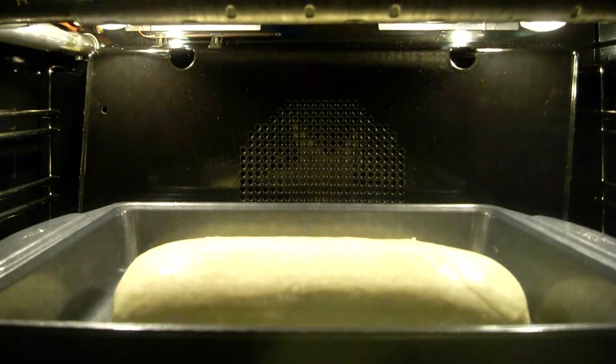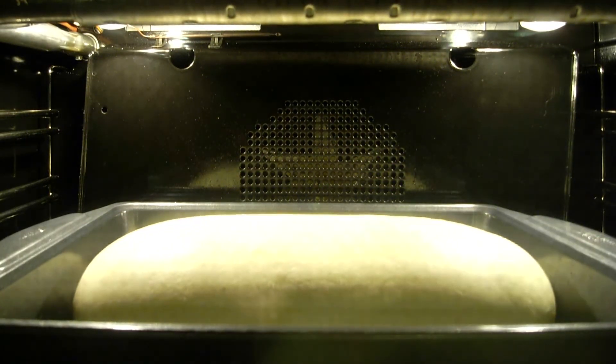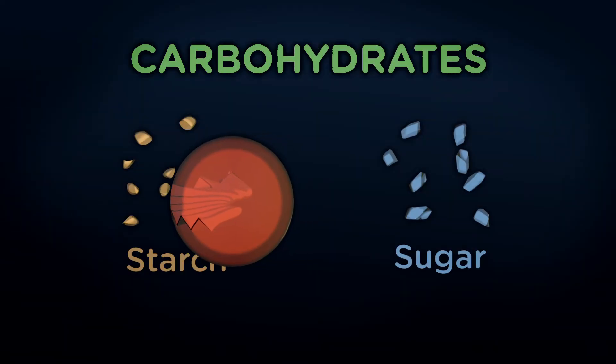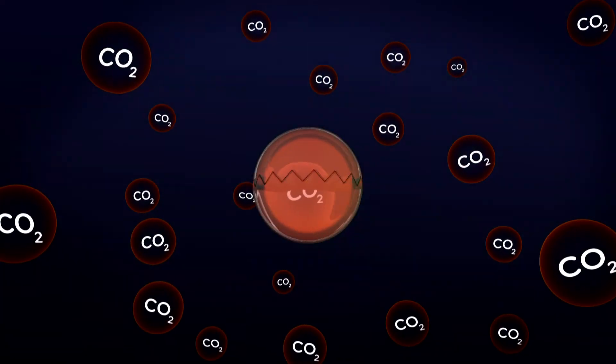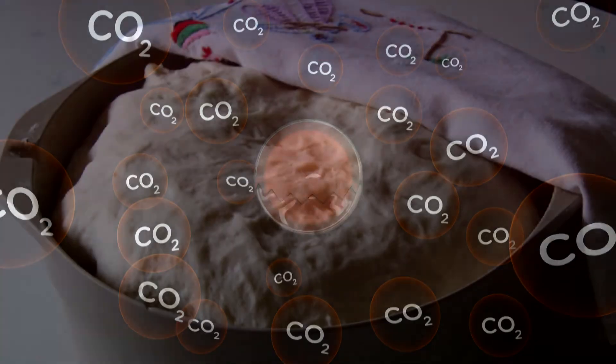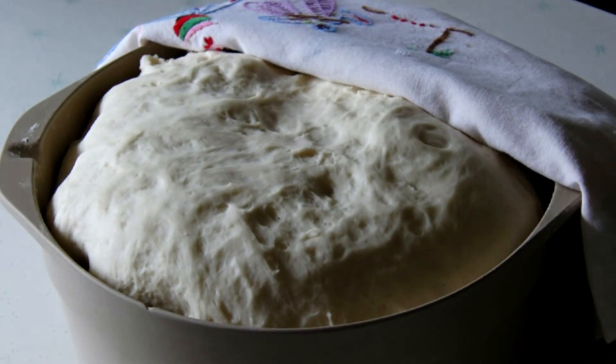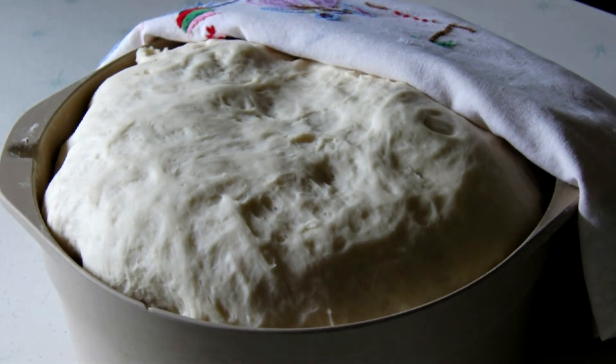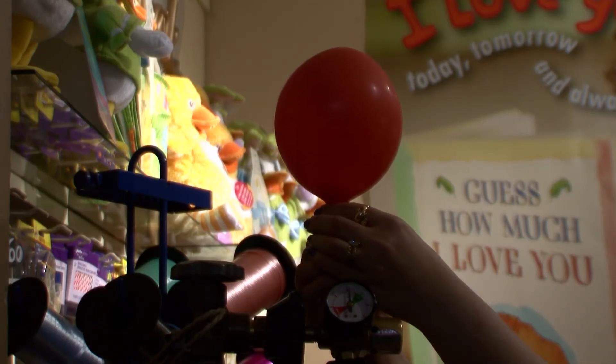You can also see CO2, or at least its effects, when you make bread. Yeast eats the starch in the flour and expels carbon dioxide gas. CO2 gas expands when warm and makes the dough rise, the way helium gas expands a balloon.